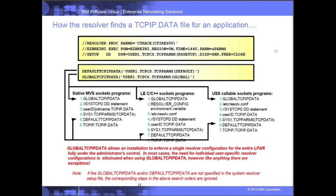For a native MVS socket program, the next step in the search would be looking for a SYSTCP DD statement in the application's PROC. If that exists, it uses it. The search continues until a file matching requirements is found, or a default TCP data file is found if one is defined, or nothing is found — in which case the Resolver call returns an error. In a single-stack LPAR not using common INET, using a global TCPIP.data is highly recommended to reduce the complexity of these search orders.